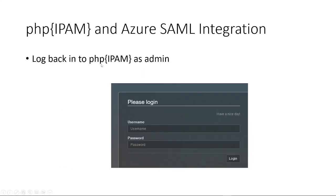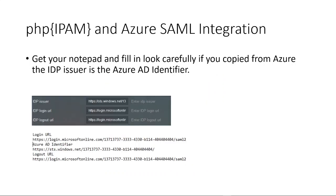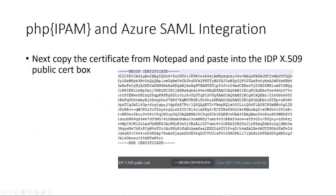Now we want to log back into PHP IPAM as admin. Next, go to Administration, then Authentication, and reopen our Azure Connect. We need to fill out the items from our notepad: the Azure AD Identifier goes into the Issuer field, the Login URL goes here, and the Logout URL goes in the bottom field. Then we want to grab our entire certificate — from one end to the other — and paste it into the IDP X509 Public Cert field. The whole thing will fit in there, trust me.